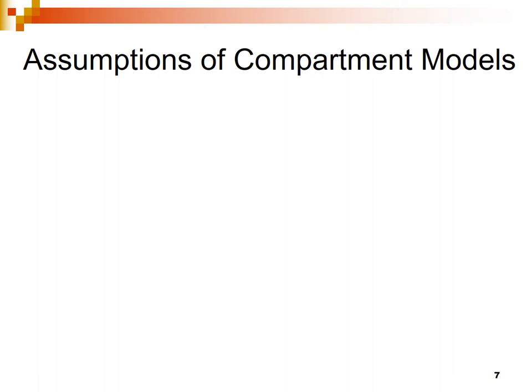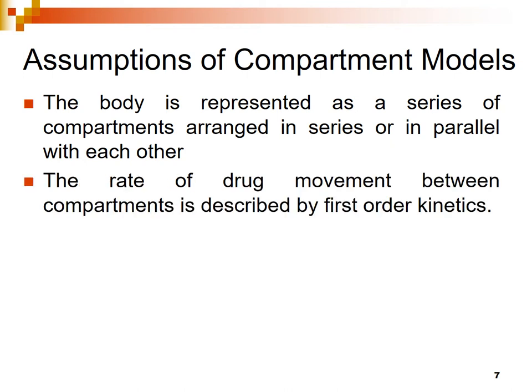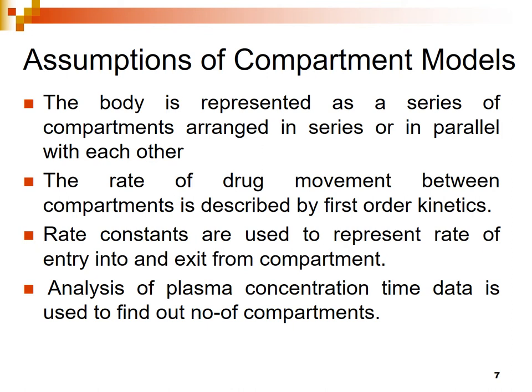Assumptions of compartment models. First, the body is represented as a series of compartments arranged either in series or in parallel. The rate of movement of drug between compartments is described by a first-order process — that is, distribution of drug follows first-order kinetics. Rate constants are used to represent the rate of entry into and exit from compartments. The number of rate constants required depends upon the number of compartments, and analysis of plasma concentration-time data is used to find out the number of compartments.